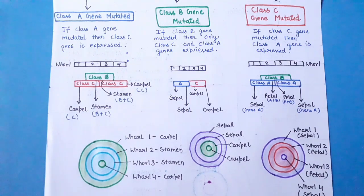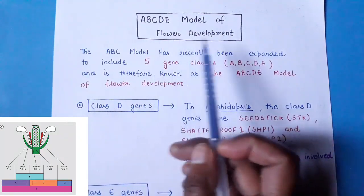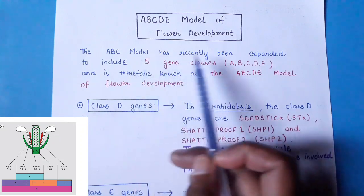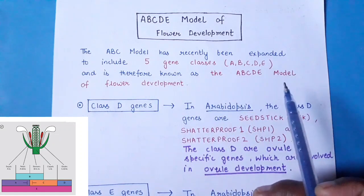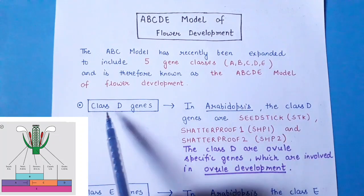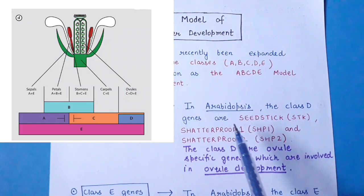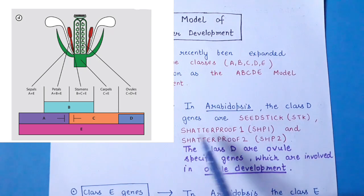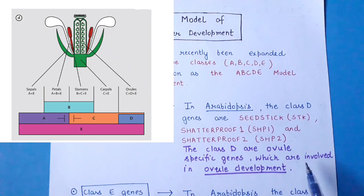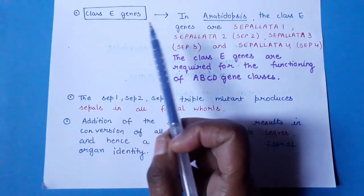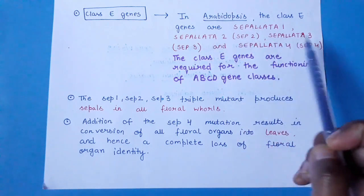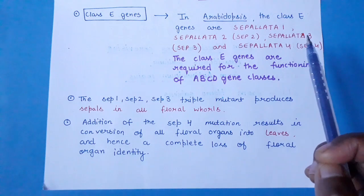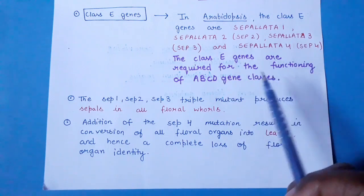The ABC model has recently been expanded into the ABCDE model by adding Class D and Class E genes. Class D genes in Arabidopsis include SEEDSTICK (STK), SHATTERPROOF 1 (SHP1), and SHATTERPROOF 2 (SHP2); these are ovule-specific genes involved in ovule development. Class E genes in Arabidopsis are SEPALLATA 1 (SEP1), SEPALLATA 2 (SEP2), SEPALLATA 3 (SEP3), and SEPALLATA 4 (SEP4).